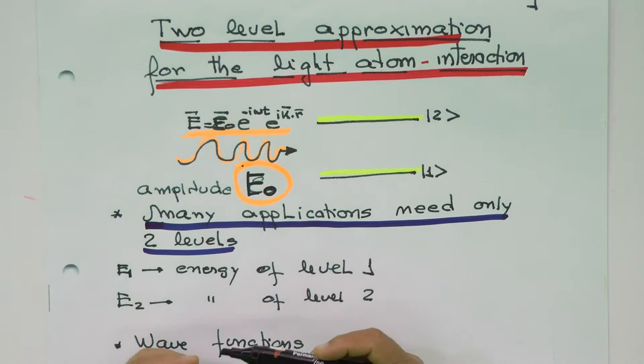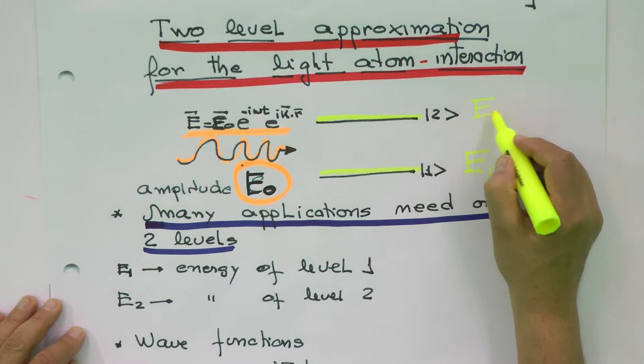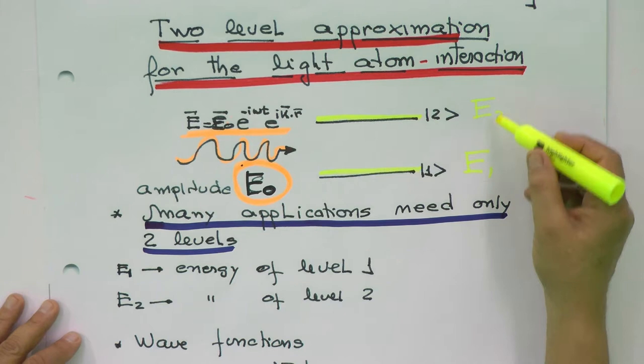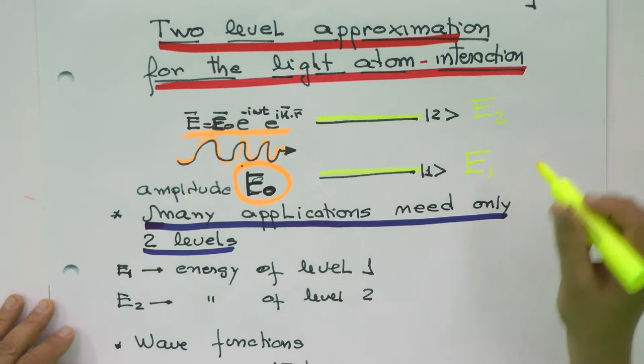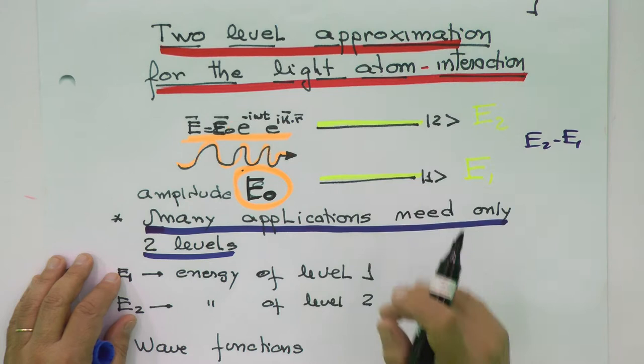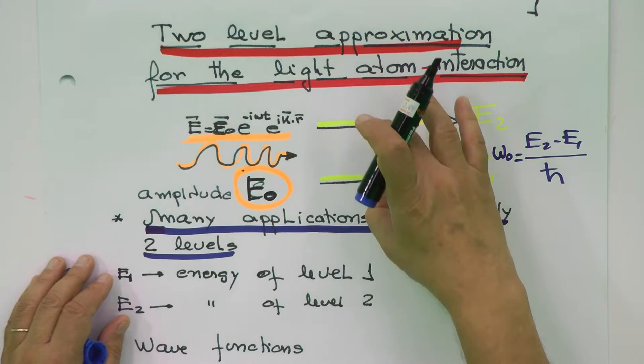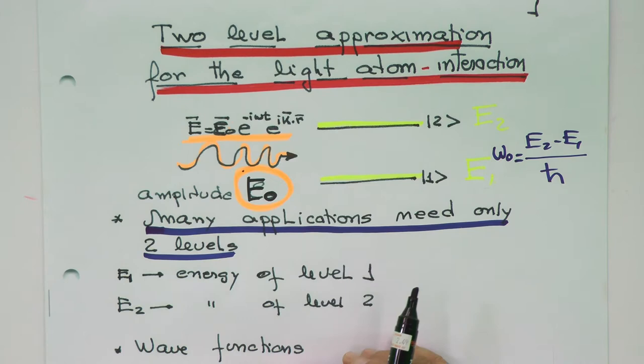In many applications we need only two levels, and we're going to consider these two levels now. The levels have energy E1 for level one and E2 for level two. E2 minus E1 characterizes the level spacing in terms of energy. If I divide by h-bar, that characterizes a typical frequency that I'll call omega-zero, which is the frequency corresponding to the energy spacing of the two levels.